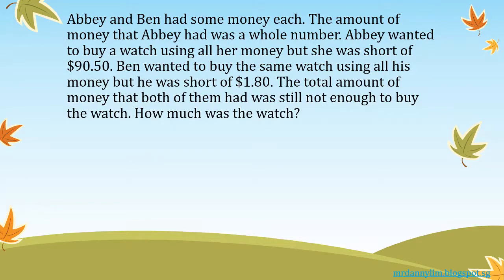How much was the watch? First, we have to decide on the method to use. There are three main methods: number one, model drawing, which is very common; number two, the unitary method, usually for percentages and ratio; and number three, branching, for fractions. For this question, since it involves more than, less than, and total-part-whole relationships, we zoom in on model drawing.